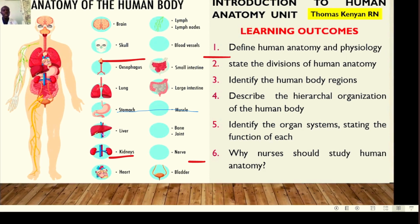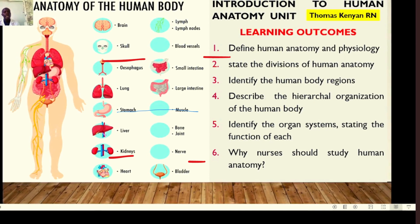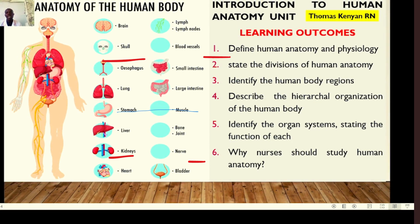Hello and welcome to this session. Today we are looking at anatomy of the body — an introduction. We have six learning outcomes: number one, define anatomy and physiology; number two, state the divisions of human anatomy; number three, identify the human regions; number four, describe the hierarchical organization of the human body; number five, identify the organ systems and state the function of each.